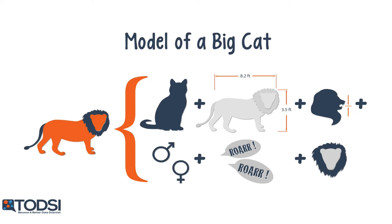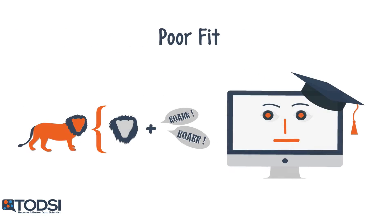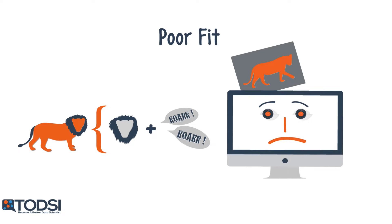Suppose we are trying to classify big cats based on data attributes like body size, weight, bite strength, sex, the presence of a mane, things like that. If we develop a model that broadly classifies any animal that roars and has a mane as a lion, then since the model ignores the animal's sex, it will improperly classify the female version of the species, the lioness, as a lion. Such a model is said to underfit the data because it fails to give sufficient weight to important data features when distinguishing between different classes.